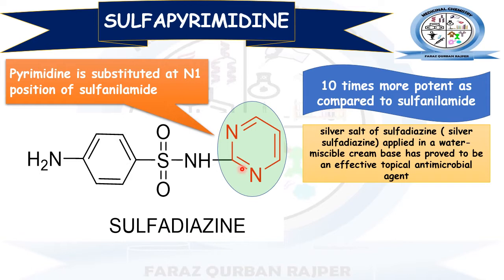The other name of Sulfapyrimidine is Sulfadiazine. Diazine is the name given due to the presence of two nitrogen atoms in the heterocyclic ring. The silver salt of Sulfadiazine or Sulfapyrimidine is known as silver Sulfadiazine, and it is available as a water-miscible cream base and has been approved as an effective topical antimicrobial agent.